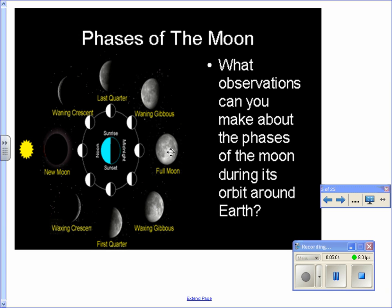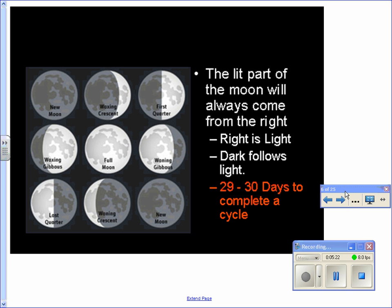From the full moon, you're going back towards the new moon phase. Now the dark comes from the right side, which is chasing out the light until it becomes completely dark, and then you have your new moon phase. The lit part of the moon will always come from the right. Remember, right is light, and the dark follows light.